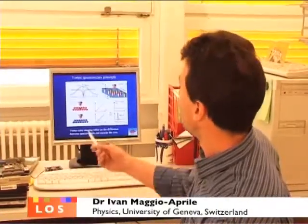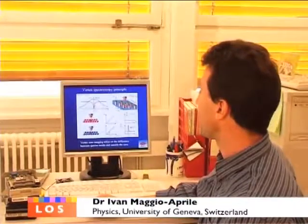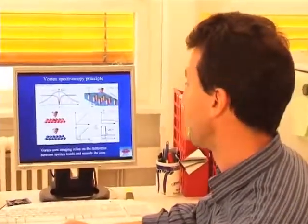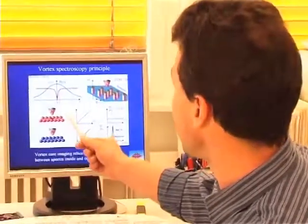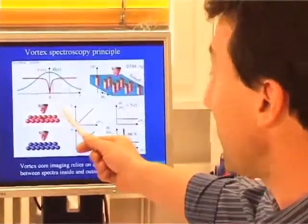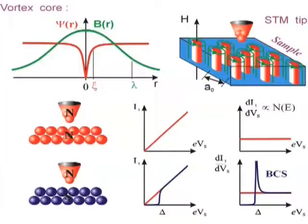Let me tell you how you can use the scanning tunneling microscope to detect individual vortices in the superconductor. The idea is based on the scanning tunneling spectroscopy plotted here.